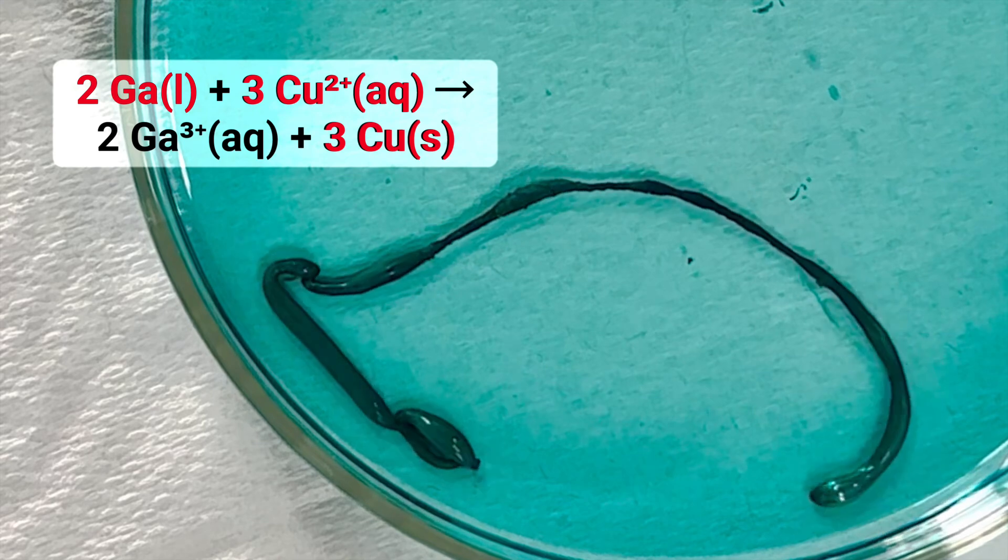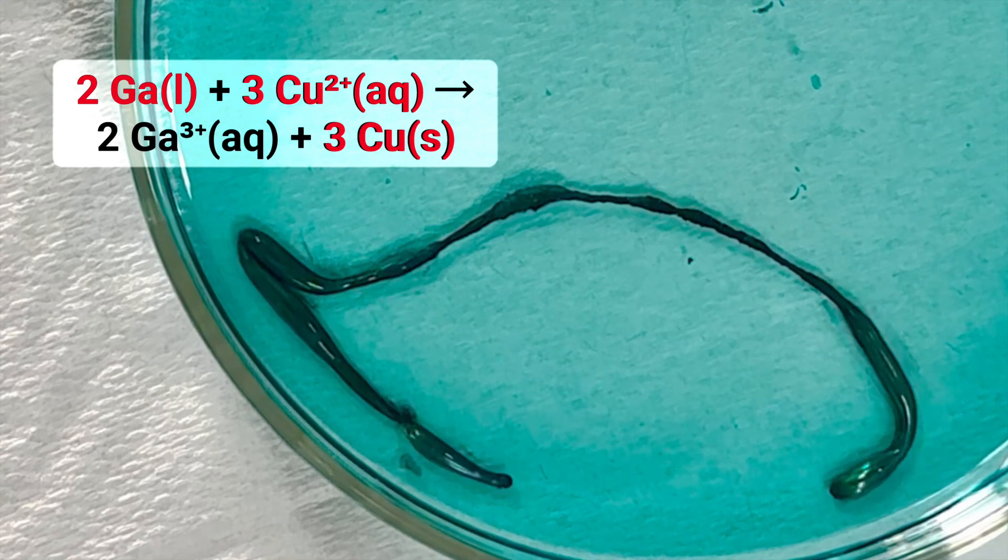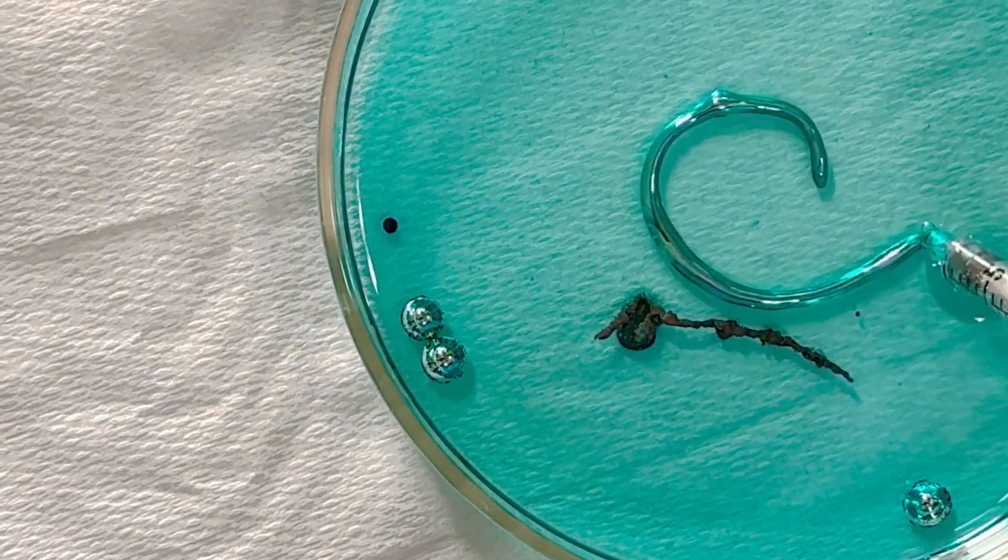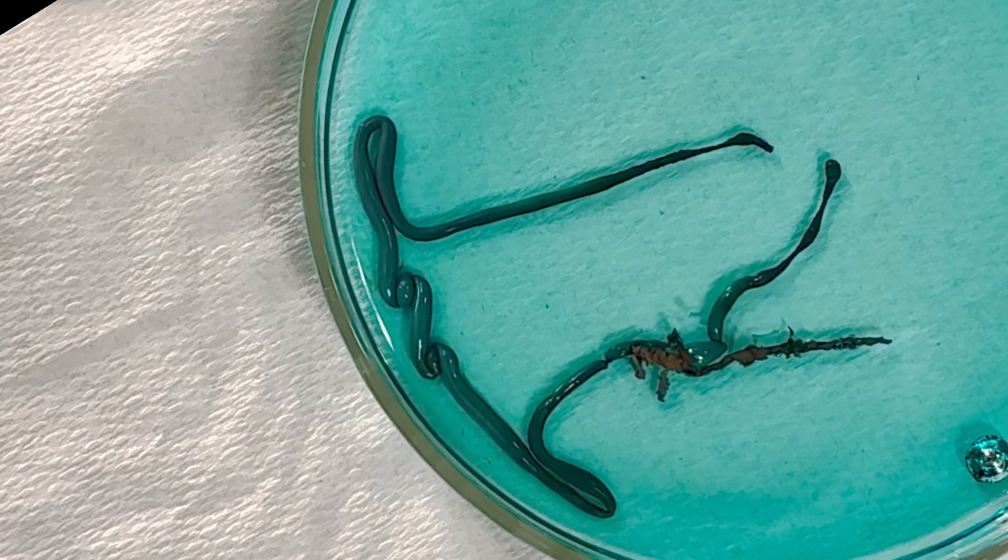The copper nanoparticles form this black stuff you see on the surface of the wormy structure. It's important to recognize that when copper nanoparticles adhere to the surface, the surface tension of the gallenstan also changes.